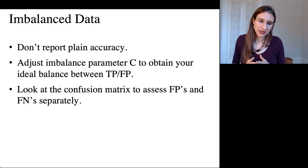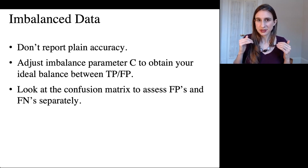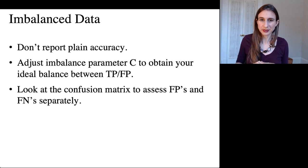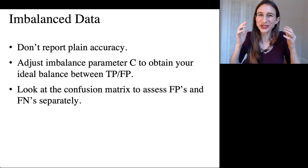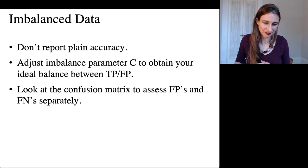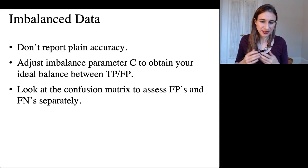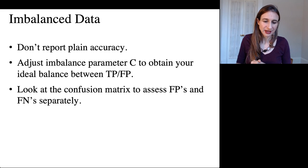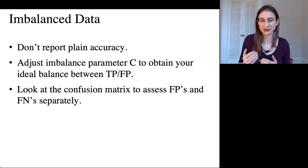So just to summarize, if you have imbalanced data, it's not a good idea to report plain accuracy because you could mislead someone into thinking that your model is 99% accurate when it actually is, but that's not meaningful. You should adjust the imbalance parameter C to obtain your ideal balance between true and false positives, and then always look at the confusion matrix to assess false positives and false negatives separately.